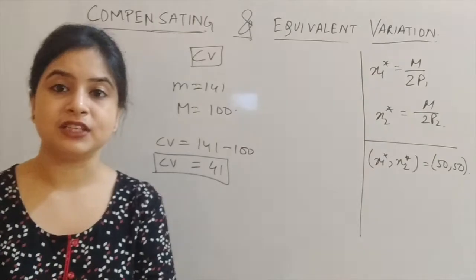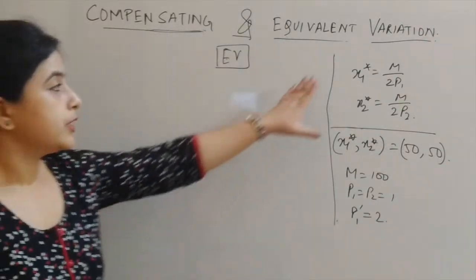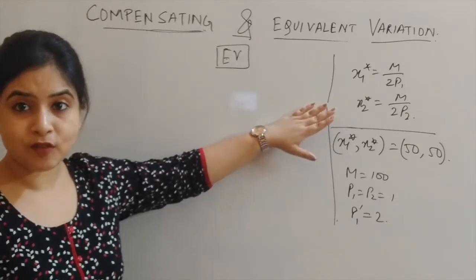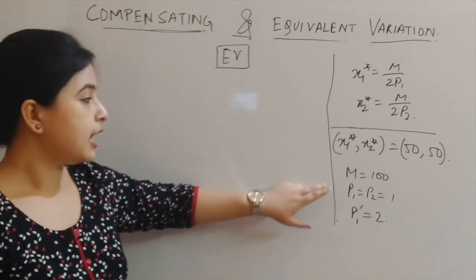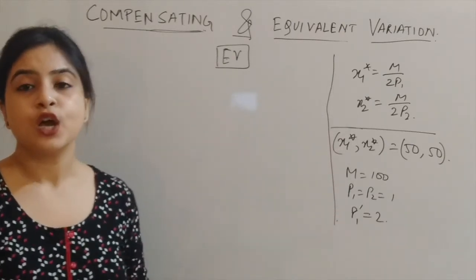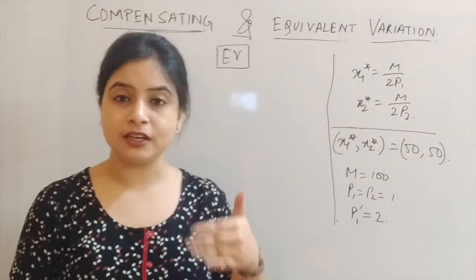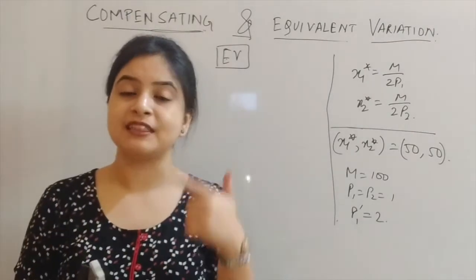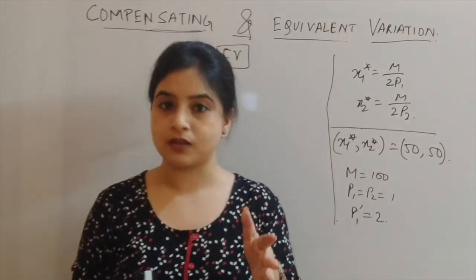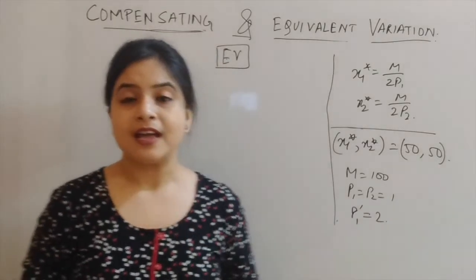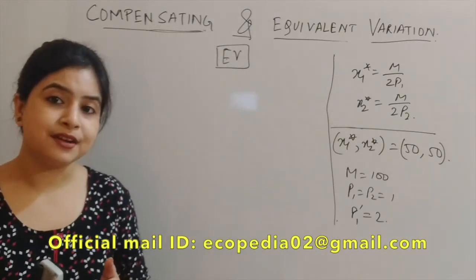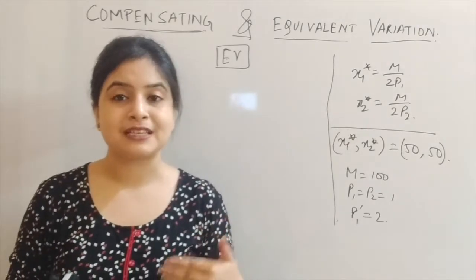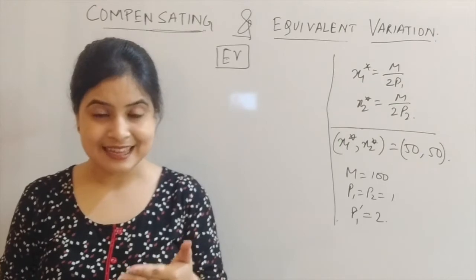Now let's find the equivalent variation. The important values we need are x1 star = M/2p1 and x2 star = M/2p2, with initial bundle (50, 50). Equivalent variation is the scenario in the initial situation so that when there is finally a price increase, the consumer's utility level remains constant or unchanged. The initial equilibrium here represents the willingness to pay.